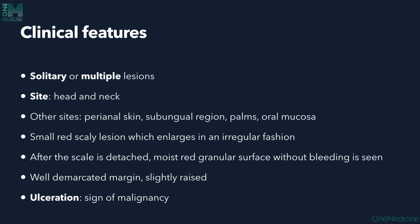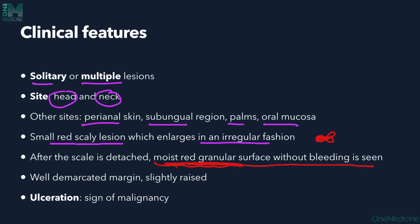Regarding clinical features, there can be a solitary or multiple lesions. The more commonly involved sites are sun-exposed areas, particularly the head and neck. Other sites include perianal skin, subungual region, palms, and oral mucosa. The lesions appear as small red scaly patches that enlarge in an irregular fashion. When the scale is detached, a moist red granular surface is seen without any bleeding.